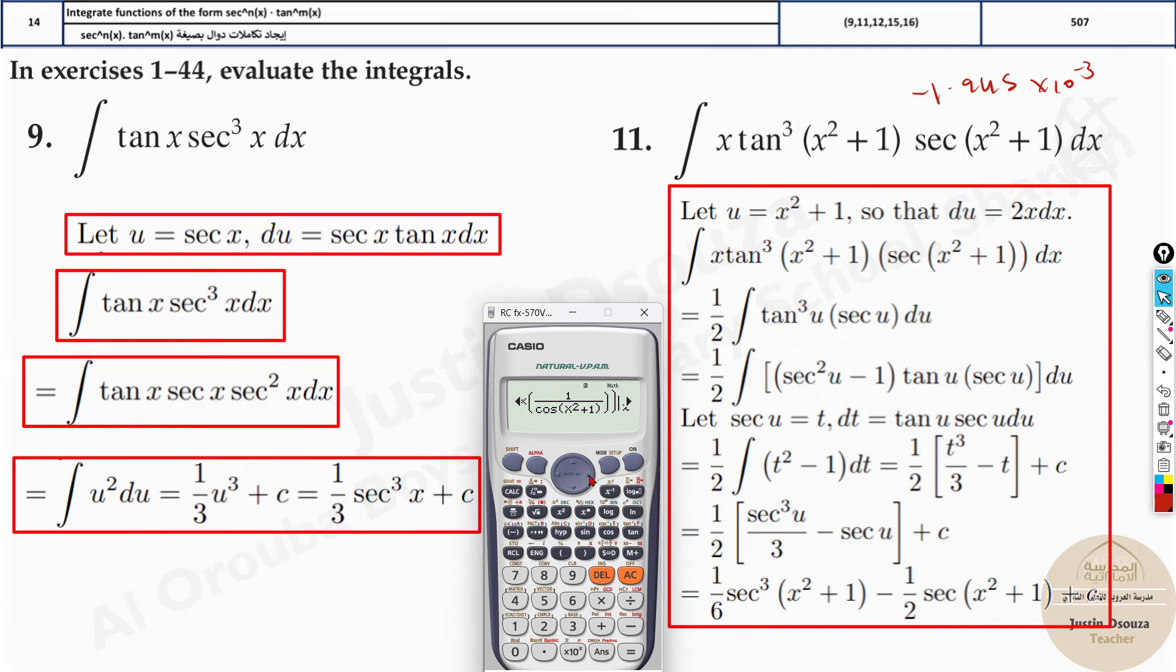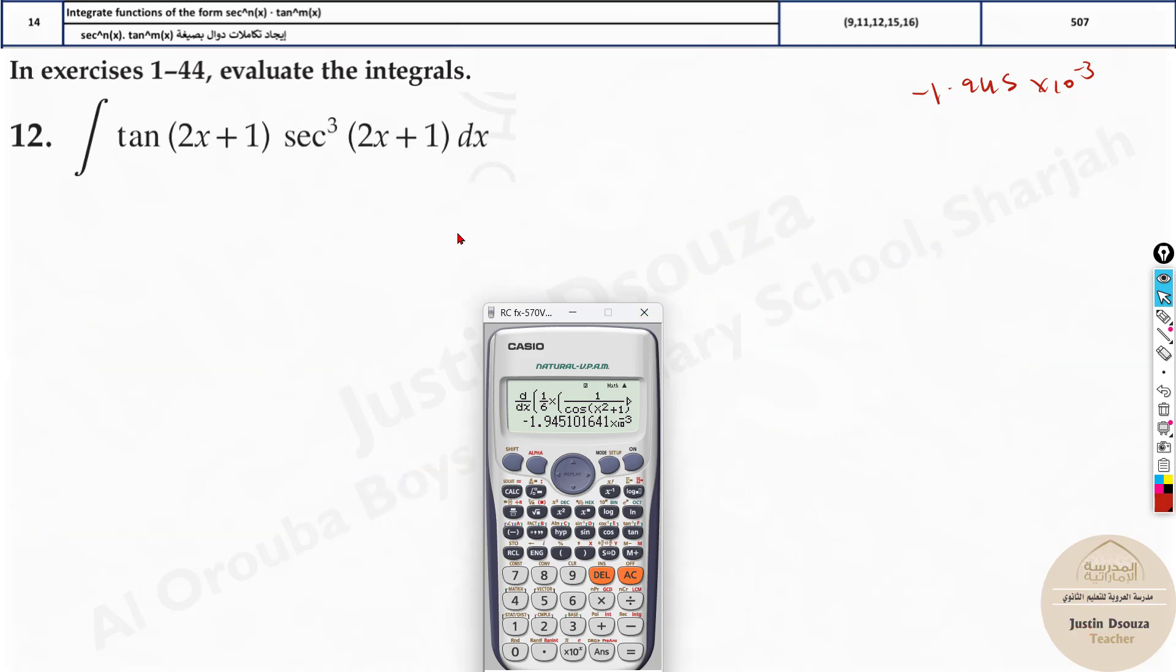Then just press next and again close the bracket. You do not need to write plus c because it's constant. Even if you put it, it will become 0 at 1.5. This answer must match whatever you get. Only one answer will match and that's the correct answer. So for all these problems, the same thing.